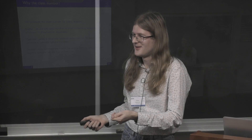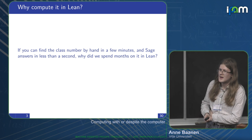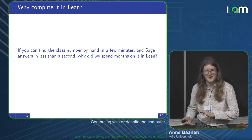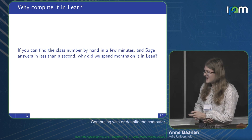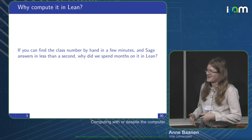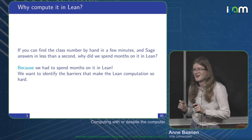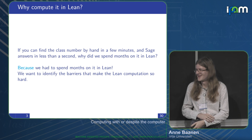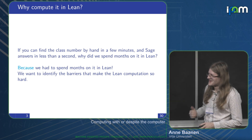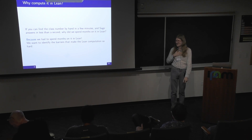If you fire up Sage, ask it to compute a class number, and let it print the result, it's less than a second — I timed it. So now I'm going to disappoint you: we took many months. On average about two months of full-time work to formalize the computation of the class number and prove that certain equations have no solutions. That's many orders of magnitude more than you'd do by hand.